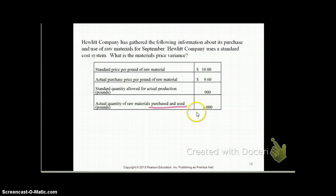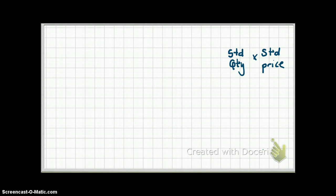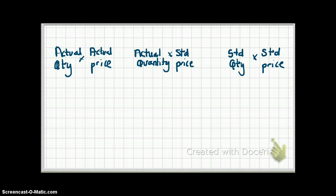The format we're going to use is the same format you will use to calculate direct material variances, direct labor variances, and variable manufacturing overhead variances. On the right-hand side, you will have standard quantity times standard price. In the middle column, you will have actual quantity times standard price. And in the left-most column, you will have actual quantity times actual price. If you remember these three columns, you've pretty much got your variances covered.